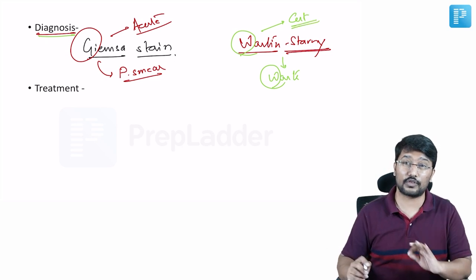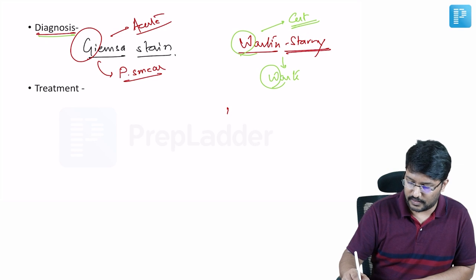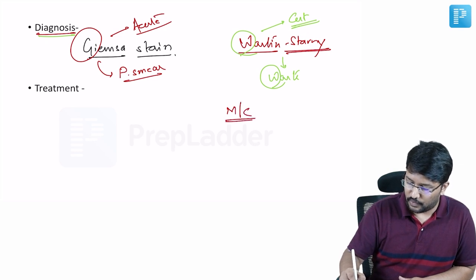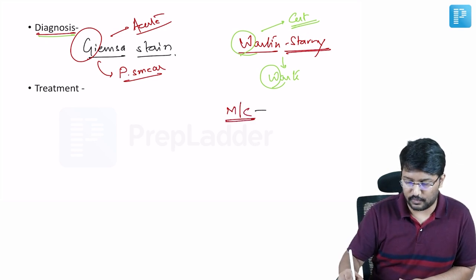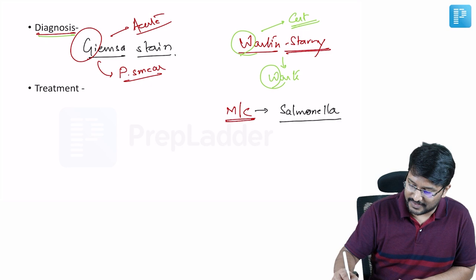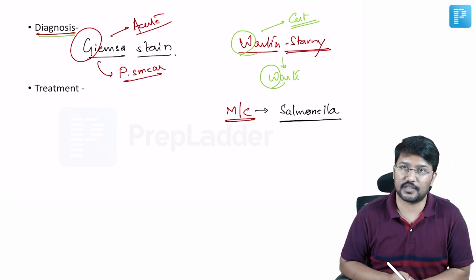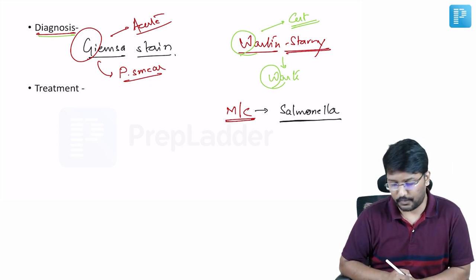Now they can ask you what is the most common co-infection. What is the most common co-infection seen with these organisms? So the most common co-infection is Salmonella. A good number of these, more than one third of the patients have evidence of Salmonella co-infection when they present with the acute phase.